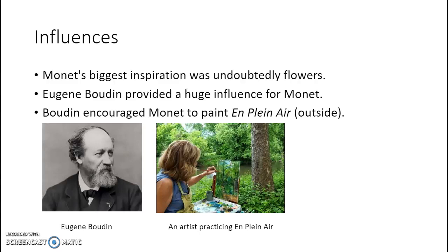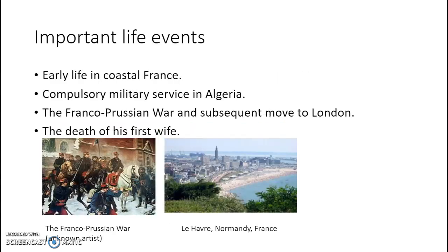Now let's talk about some of the life events that influenced his work. Early in his life, Monet moved with his family from Paris to a small commune in Normandy called Le Havre, a coastal town situated on rugged terrain that inspired Monet's love for nature. Later on in life, Monet was forced into compulsory military service, as all Frenchmen were required to.